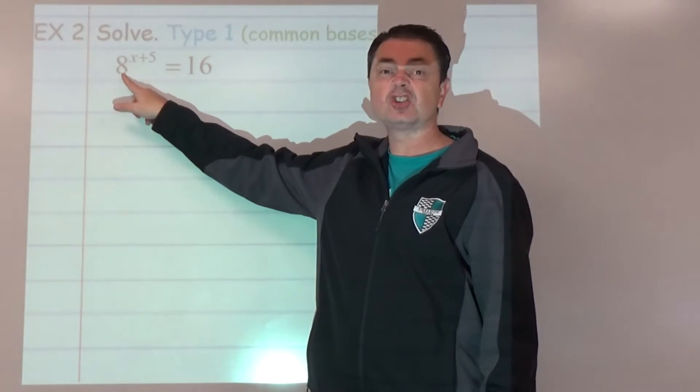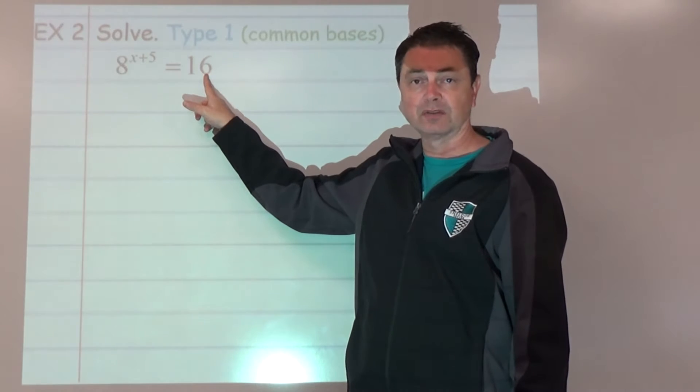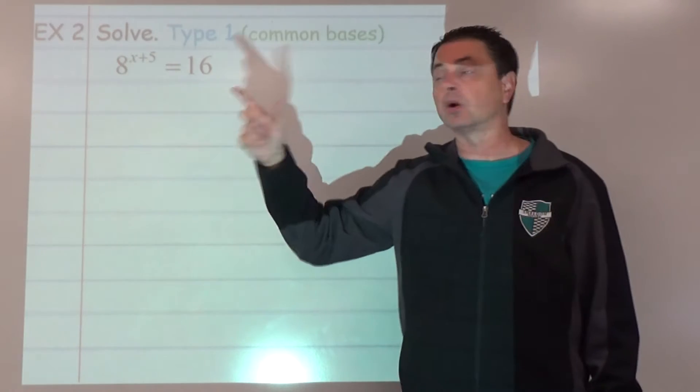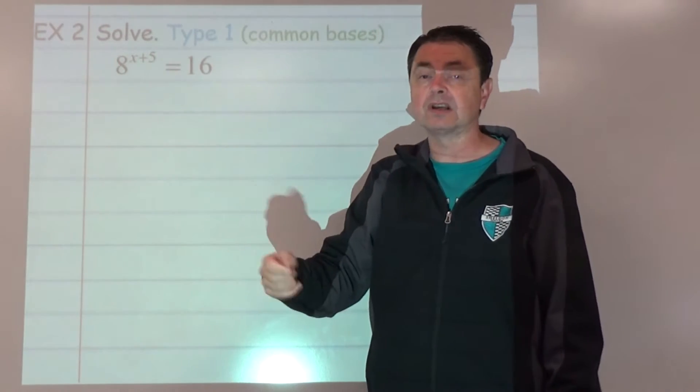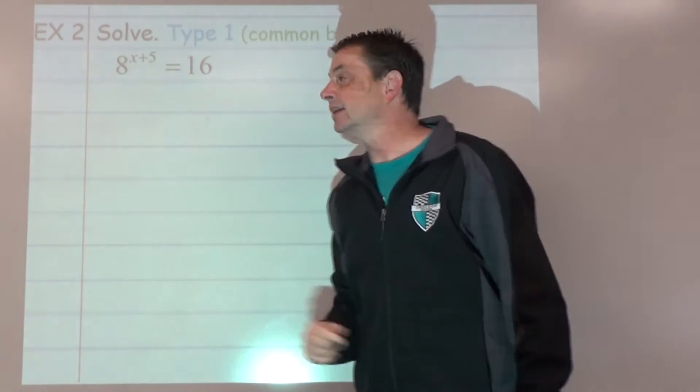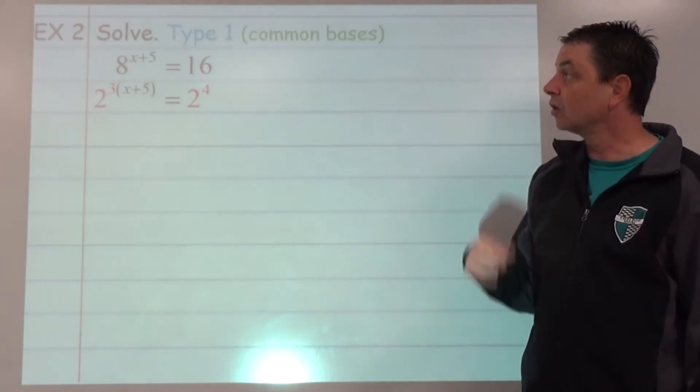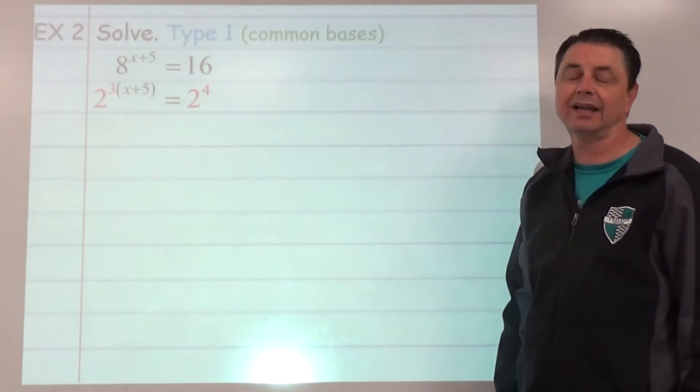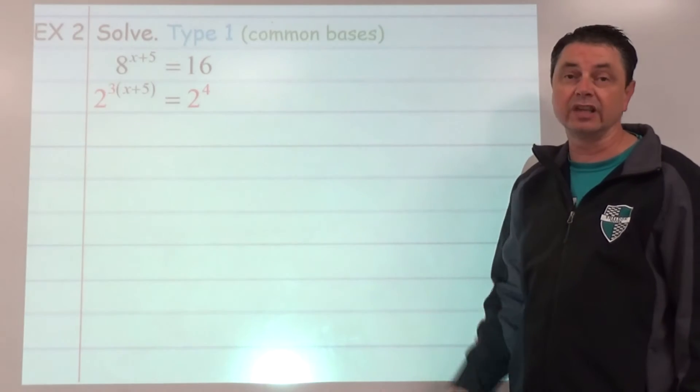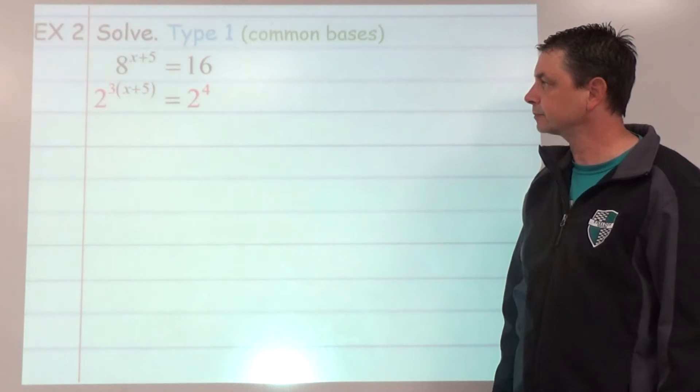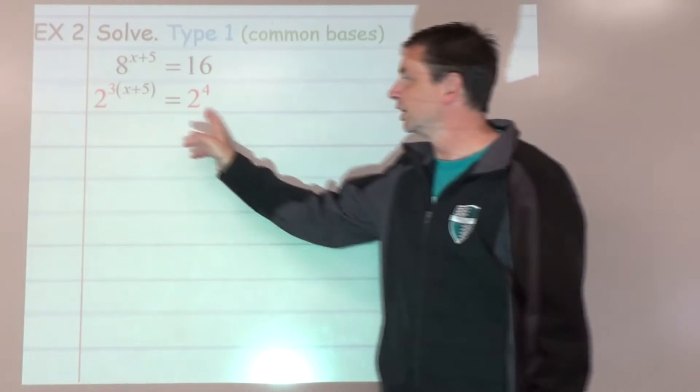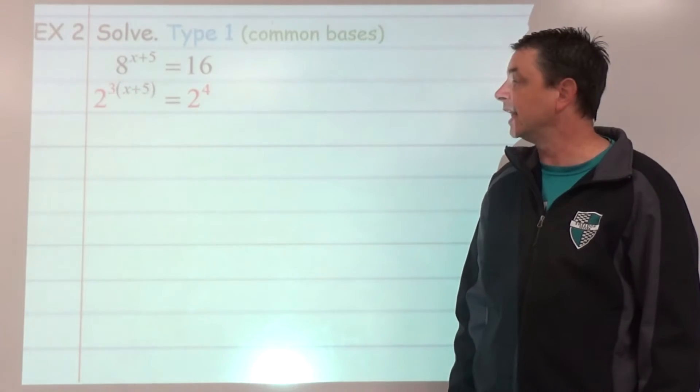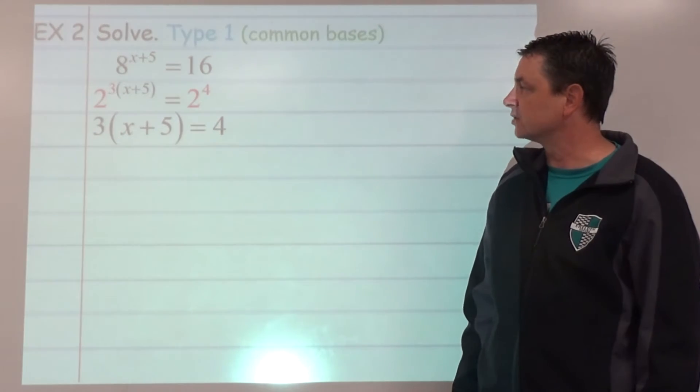So we would say this is 2 to the third, this is 2 to the fourth. When we raise a power to a power, we multiply those exponents, so we multiply the 3 and the x plus 5. So it's 2 to the third raised to the x plus 5, which means 2 to the power of 3 times (x plus 5). Parentheses there are important for grouping purposes. We're going to equate the exponents using the 1 to 1 property. So 3 times (x plus 5) equals 4.